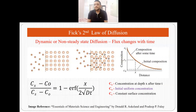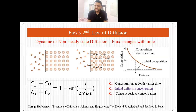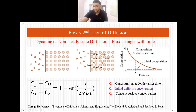Now let's talk about Fick's second law of diffusion. Fick's first law was for steady state diffusion. Fick's second law is for dynamic or non-steady state diffusion, meaning the flux is changing with time. The equation for Fick's second law states that (Cx - C0) / (Cs - C0) = 1 - erf(x / 2√(Dt)).